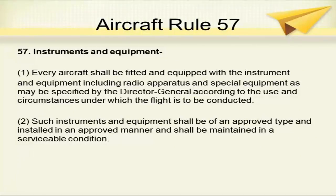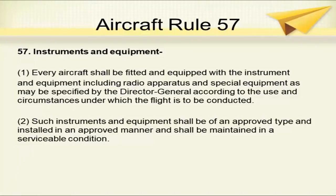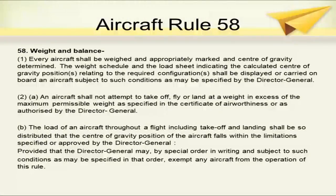Aircraft Rule 57 covers instruments and equipment. Every aircraft shall be fitted and equipped with instruments and equipment, including radio apparatus and special equipment, as may be specified by the Director General according to the use and circumstances under which the flight is to be conducted. Such instruments and equipment shall be of an approved type, installed in an approved manner, and maintained in a serviceable condition.